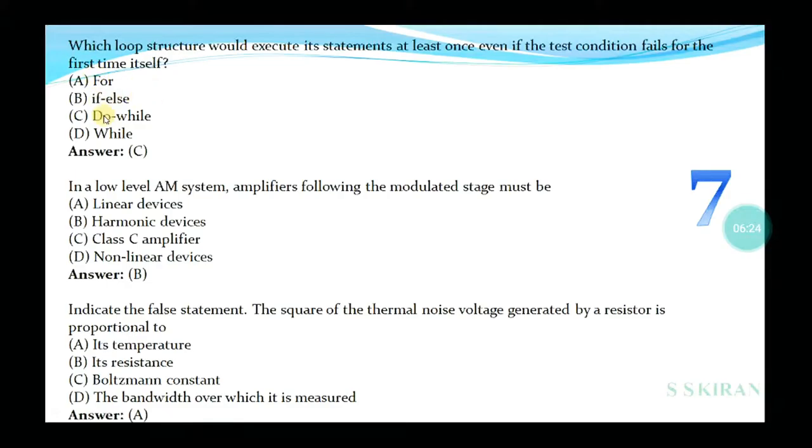Which loop structure would execute its statements at least once even if the test condition fails for the first time itself: for, if else, do-while, or while? Option is C, do-while. In a low level AM system, amplifiers following the modulated stages must be linear device, harmonic, Class C, or non-linear? Option is B, harmonic device.